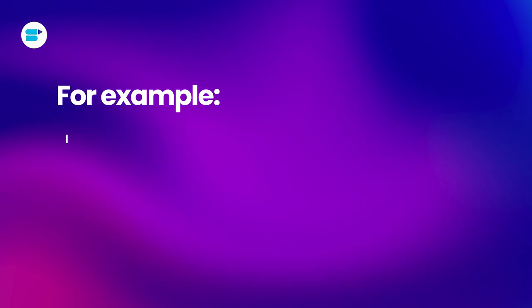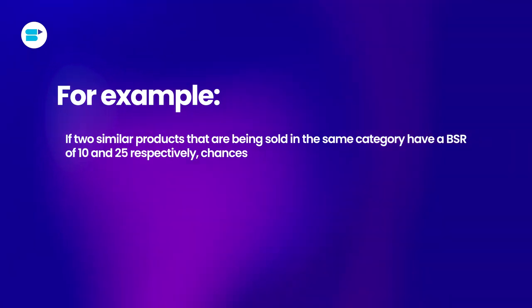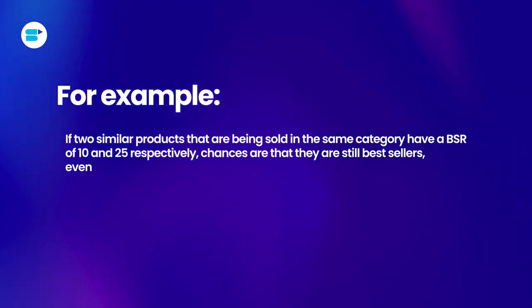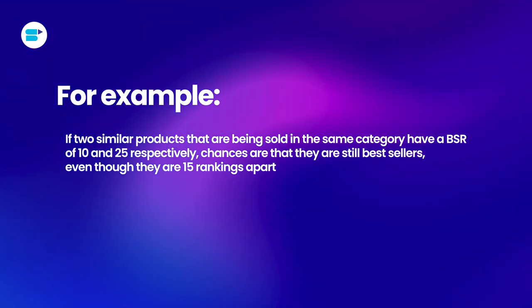In a saturated category, if your BSR is above average it still means your sales are good and you're ranking well compared to others. For example, if two similar products in the same category have a BSR of 10 and 25 respectively, they could still both be best sellers even though they are 15 rankings apart. In a niche category, a high BSR might not signify high sales — it depends on your niche and how saturated your category is.